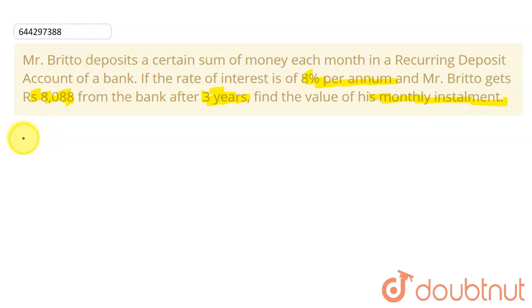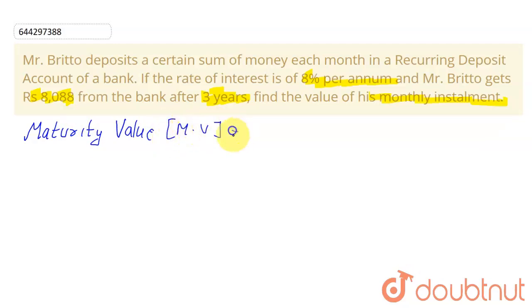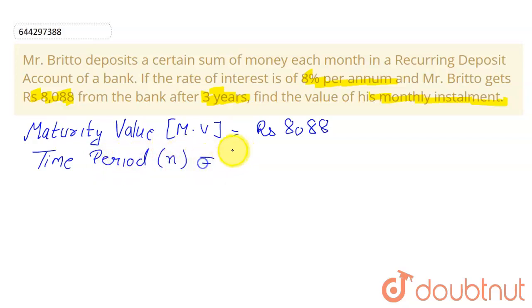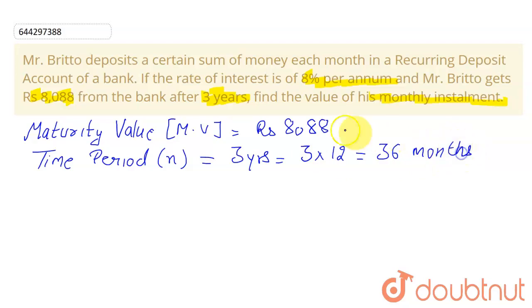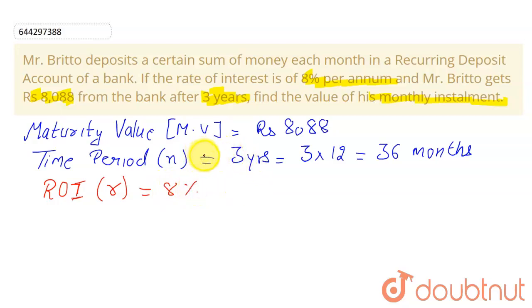Let us first write the data given in the question. The maturity value, denoted as MV, is given as ₹8088. The time period, denoted as n, is given as 3 years, which we can write in months as 3 × 12 = 36 months. The rate of interest, denoted by r, is given as 8%.